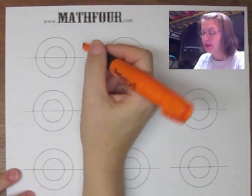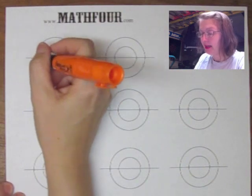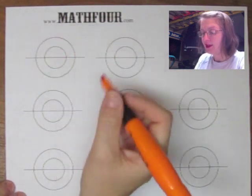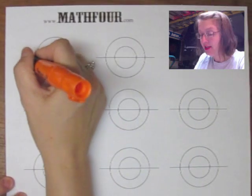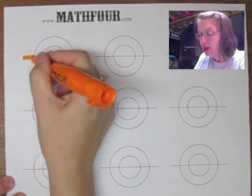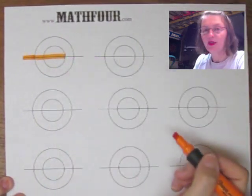Instead of coming in from the left and then going around the circle, he came in from the left and went through the first circle like that.